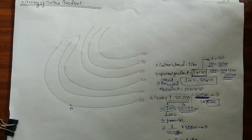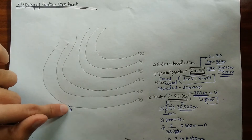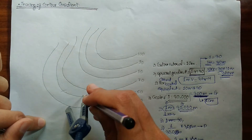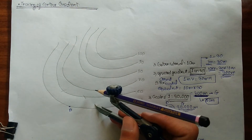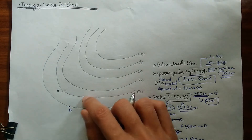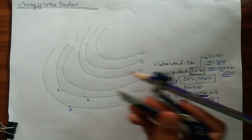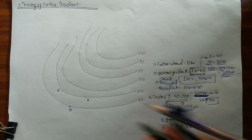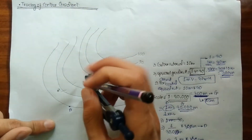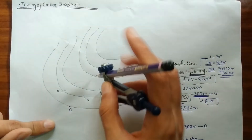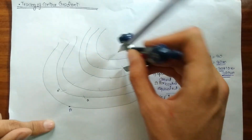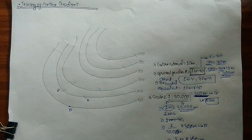To trace the contour gradient, use a compass set to 1 centimeter. With center A, make two cut marks on the next contour line — one to the right and one to the left — naming them A and A-dash. Choose one mark, then from that new center, again with the compass still set to 1 centimeter, make two more marks on the following contour line. Continue this process upward through all the contour lines up to the final 100-meter mark.